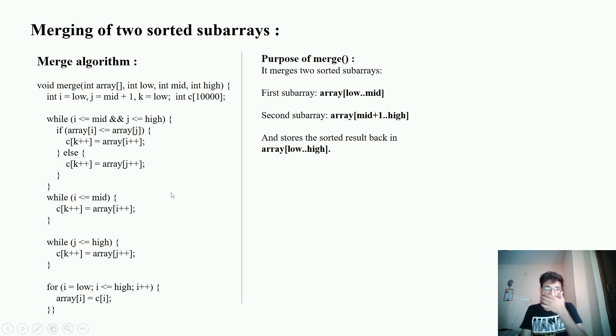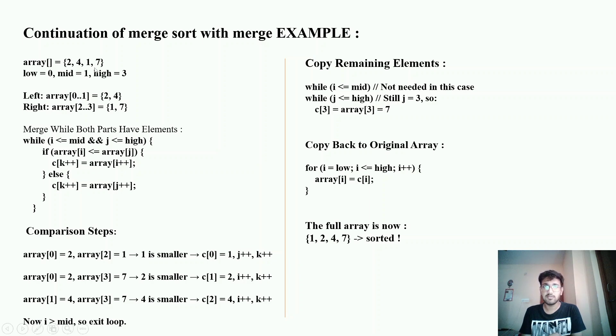Merging of two sorted sub arrays. The algorithm basically checks whether the particular condition is met. If the condition is met then it would be adding into a sorted array. The purpose of this merge sort algorithm is it takes the first sub array and second sub array and merge it into a final sub array which would be sorted. Here we have the value of 0 and the mid value of 1 which is at index 0 and 1. In the left sub array we have 2 comma 4 and in the right sub array we have 1 comma 7. Previously we recursively sorted the sub arrays. Now while merging we have to check whether the index of i is less than mid or not and j should be less than high.